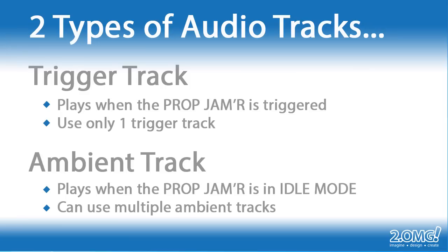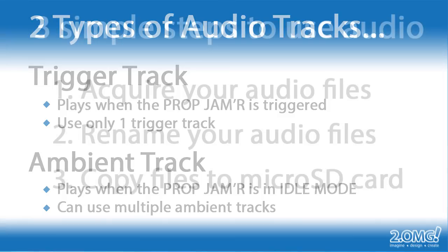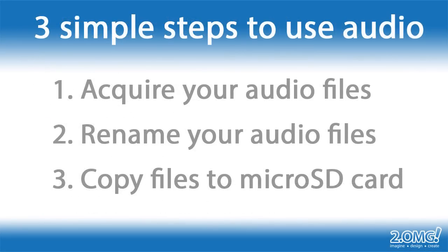Let's get started using audio. There are basically three simple steps. The first step is to acquire your files. The second is to rename your files so that the Prop Jammer knows how to use them. And the third is to copy your files to the micro SD card and eject the card safely. I'm going to spell these steps out in detail, so it might sound complicated, but this is a quite simple process once you do it once or twice.